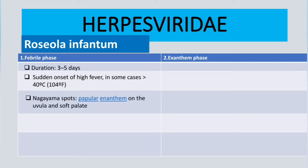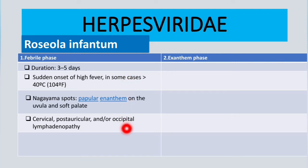Another feature of the febrile phase is called Nagayama spots. These are a papular enanthem on the uvula and soft palate. An additional feature of this phase is cervical, post-auricular, and/or occipital lymphadenopathy. All these findings occur during the febrile phase when the fever is high.